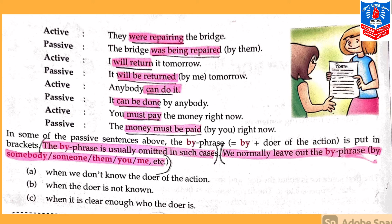Now, some rules about the 'by phrase'. In all the passive sentences above, 'by phrase' has been used — by them, by me, by you — everything is written in brackets along with 'by'. The by phrase equals 'by' plus the doer of the action — whoever is doing the action in the sentence.